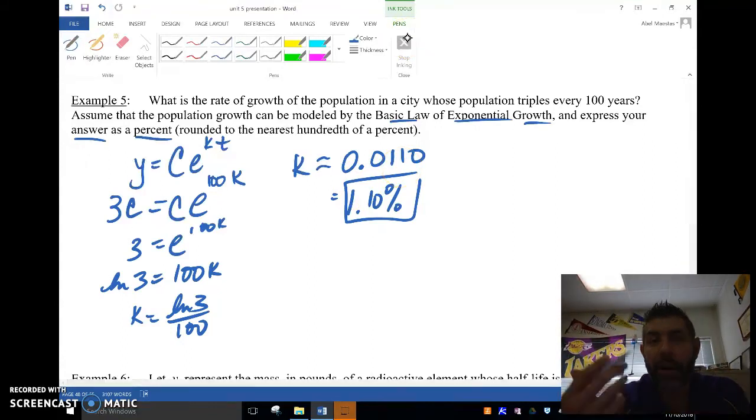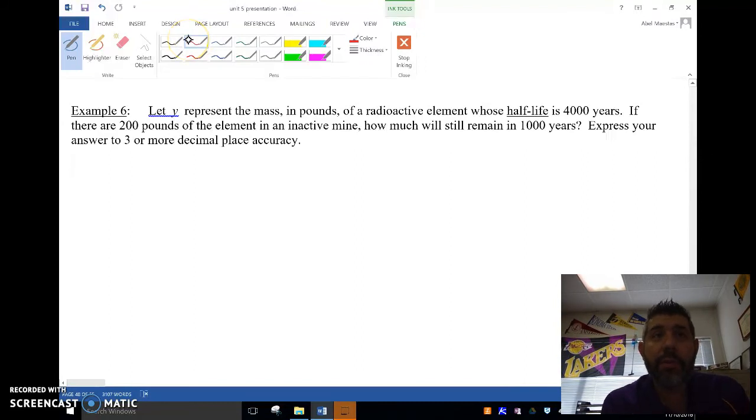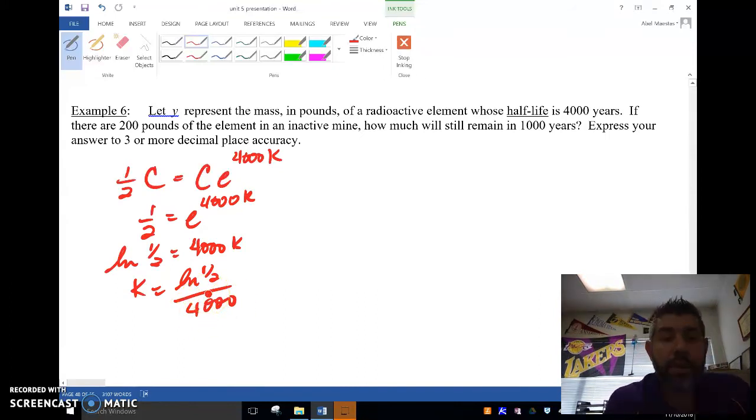That's an example of using our basic law of exponential growth. Let's take a look at one more. We're talking about half-life. Half-life means how long it takes for half of it to still be around. So basically I'm saying in 4,000 years, half of what I started with—if I started with C, I'm gonna have half C. In other words, 1/2 equals e to the 4,000k, and ln of 1/2 equals 4,000k, so k equals ln of 1/2 over 4,000.